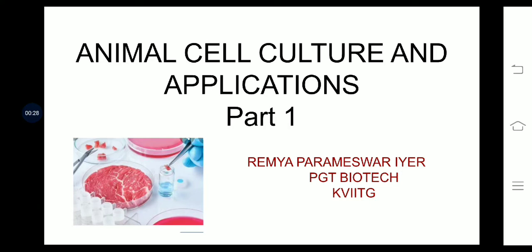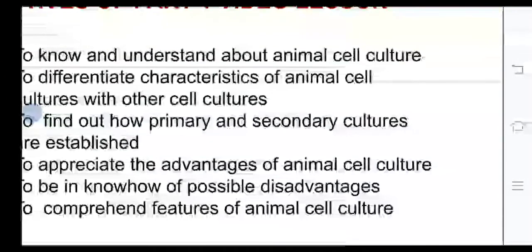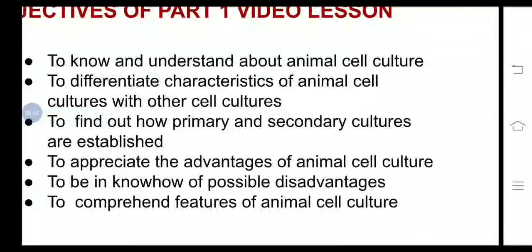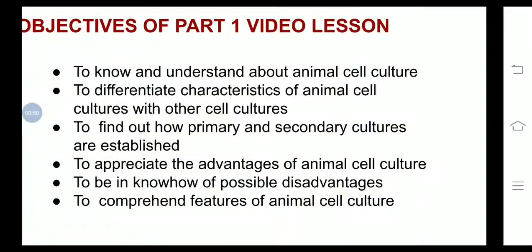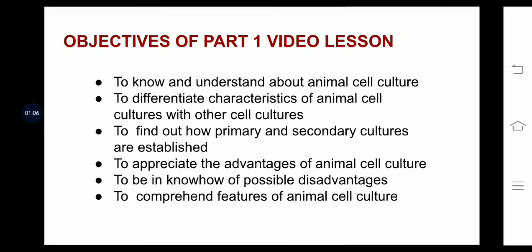Objectives of Part 1 video lesson: to know and understand animal cell culture; to differentiate the characteristics of animal cell culture with other cultures; to find out how primary and secondary cultures are established; to appreciate the advantages of animal cell culture; to be aware of possible disadvantages; and to comprehend the features of animal cell culture.